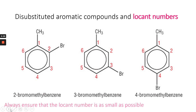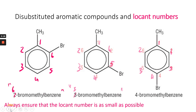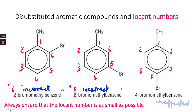It's quite important to think about the locant number, and whether it's the largest or the smallest that's possible. If you were to count counterclockwise, then 2-bromomethylbenzene would become 6-bromomethylbenzene, and 3-bromomethylbenzene would become 5-bromomethylbenzene. Both of those are incorrect because they don't use the smallest possible locant number. 2 is smaller than 6, and 3 is smaller than 5. In the case of 4-bromomethylbenzene, it doesn't make any difference.